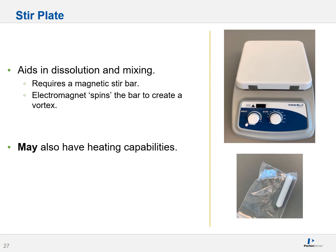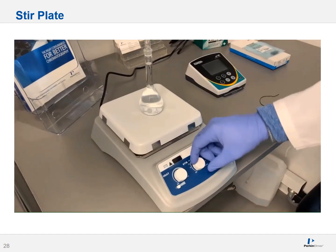You will also encounter stir plates. A stir plate is there to stir and dissolve things, aiding in solution mixing, and requires the use of a magnetic stir bar as shown on the slide. There is an electromagnet inside the stir plate that spins, and as it spins it spins the bar on top of it — assuming the bar is placed in solution, it will create a vortex. Your stir plate may also have heating capabilities and can come in many shapes and sizes. I've seen stir plates capable of stirring up to 12 items at a time.